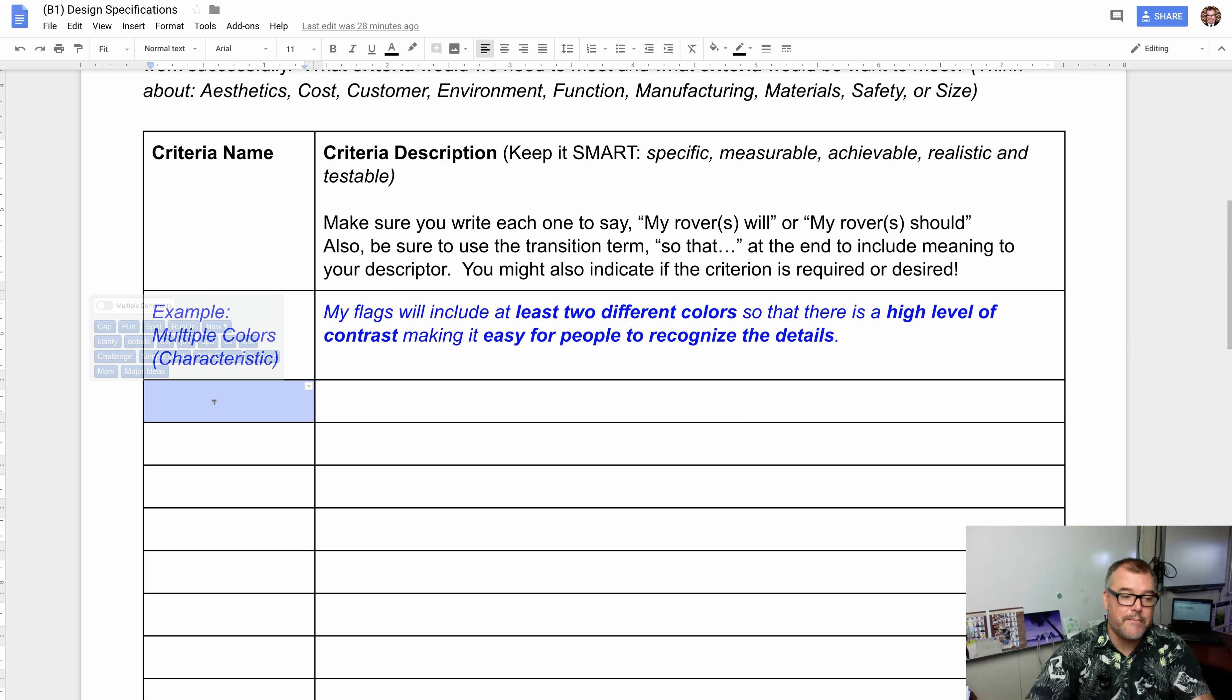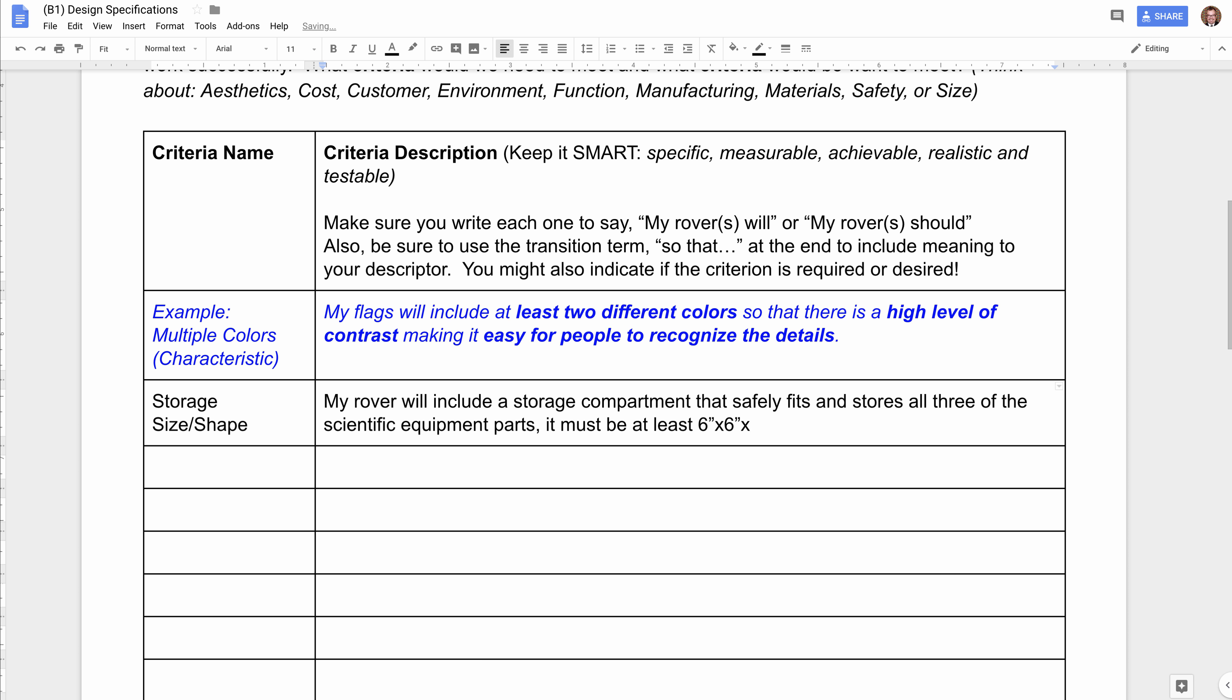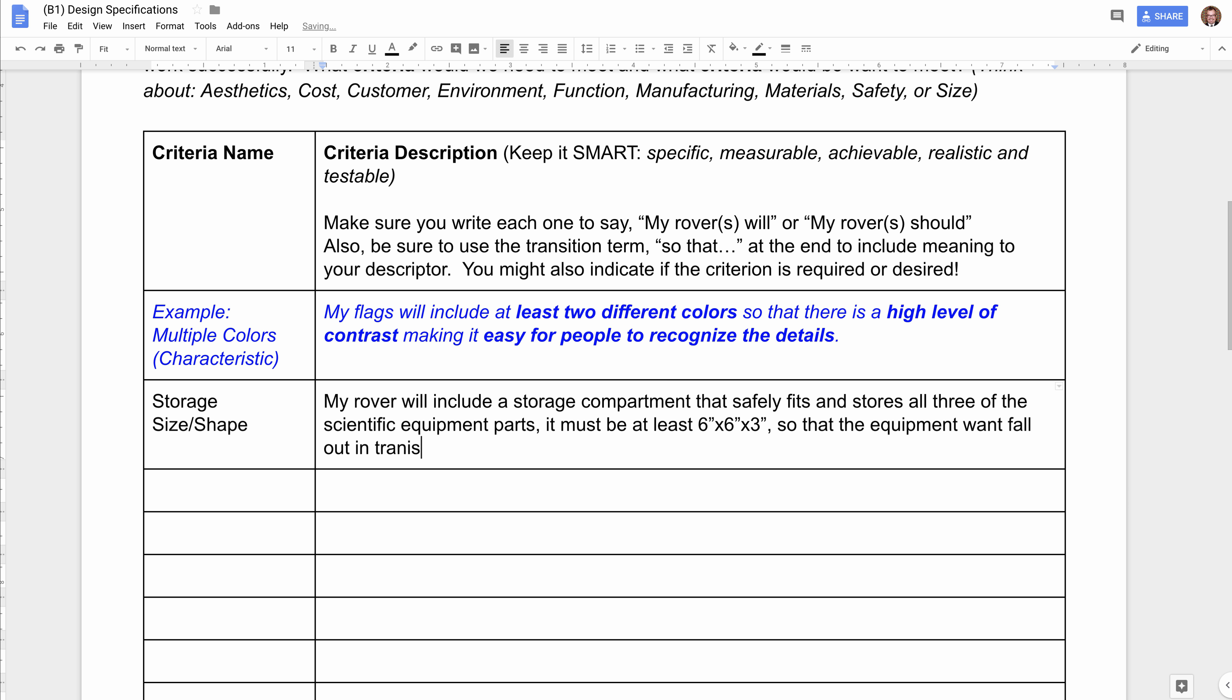So if we were to go back and write this out, we might write it as storage size or shape. That would be the criteria name. My rover will include a storage compartment that safely fits and stores all three of the scientific equipment parts. It must be at least six inches by six inches by three inches. And then I would finish off with so that the equipment won't fall out in transit and become lost or stolen.